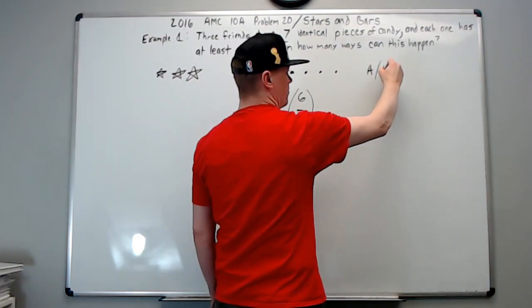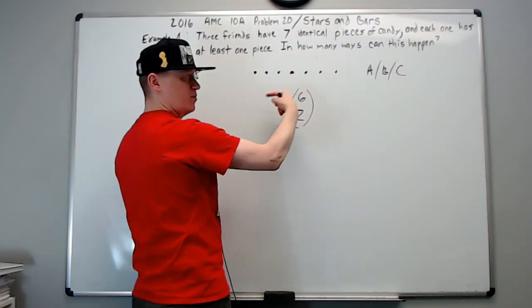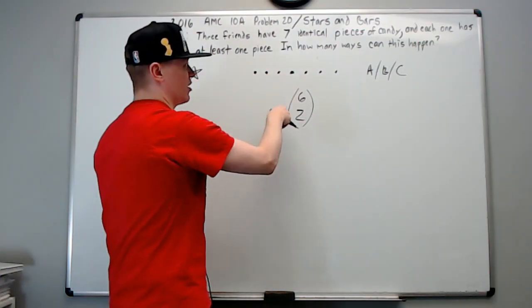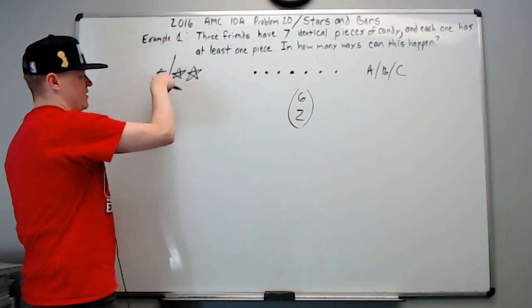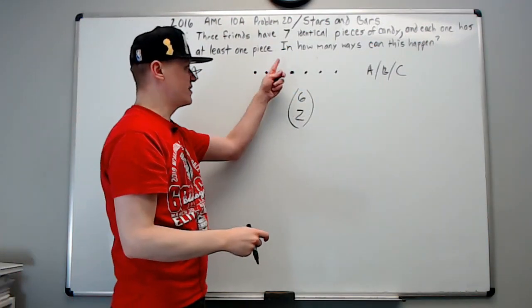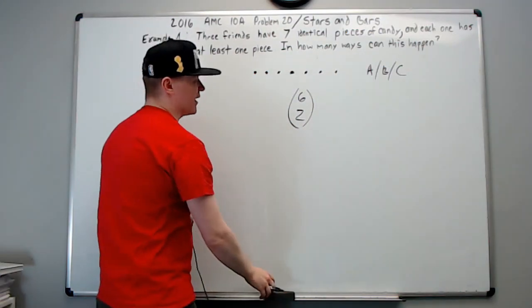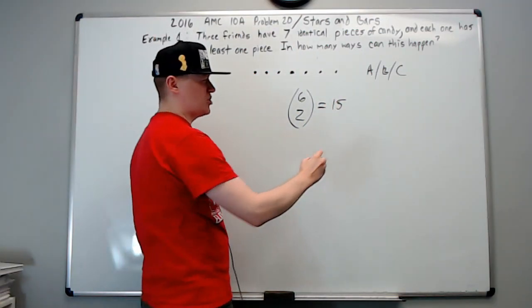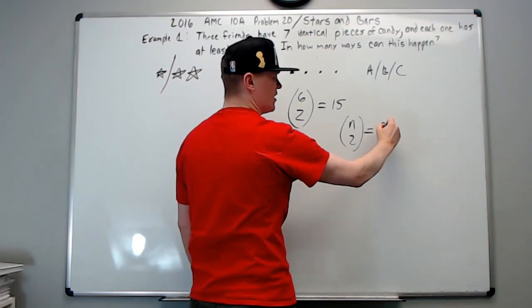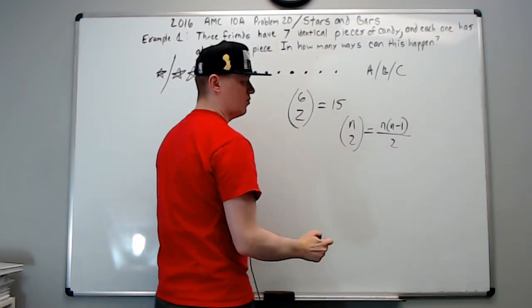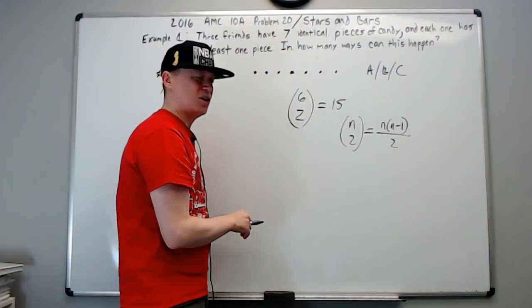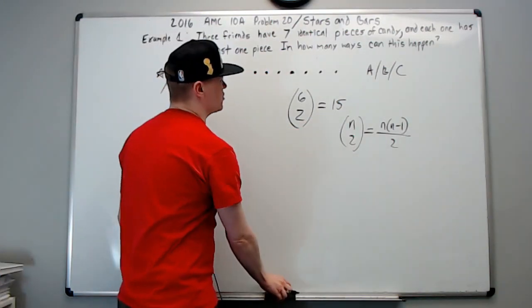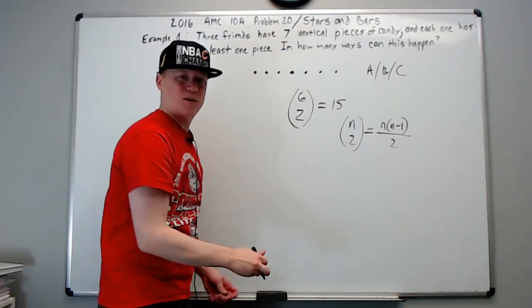That's how stars and bars works — those are the bars and those are the stars, or stones and sticks, or rice and chopsticks. That's example one, which comes out to 15. A useful shortcut: n choose 2 equals n times (n minus 1) over 2. I'll have another video about combination shortcuts in the future.